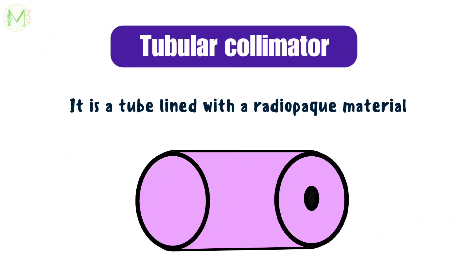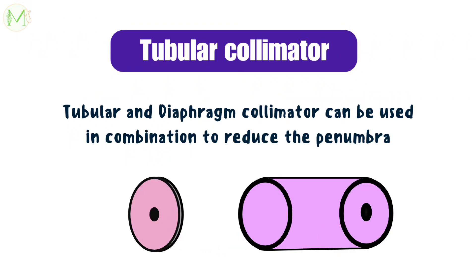The next type of collimator is tubular. It is a tube lined with or constructed with a radiopaque material, usually lead. A tubular collimator can be used along with a diaphragm collimator in order to reduce the penumbra.